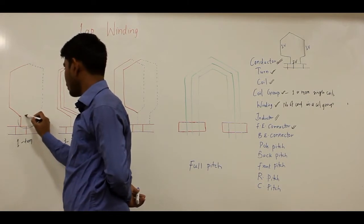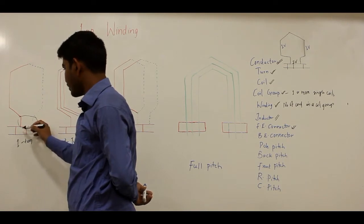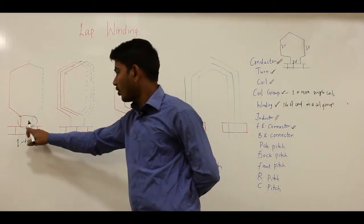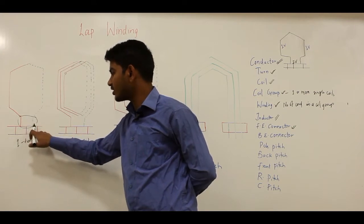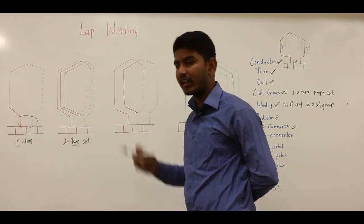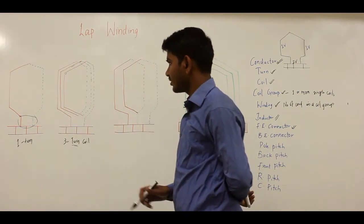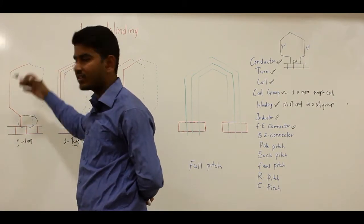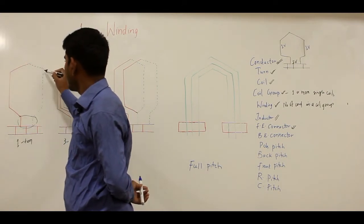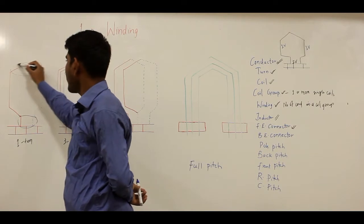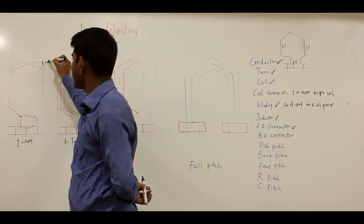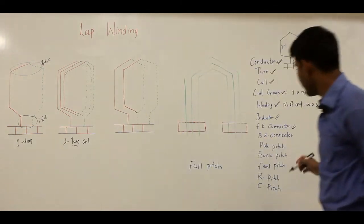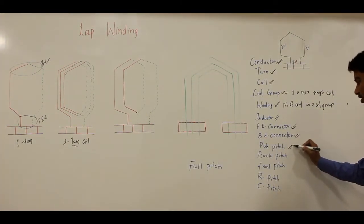The front end connector is a wire connecting the front portion of a coil to the adjacent commutator segments — especially in lap winding. The back end connector connects the inductor on one side of a coil to the inductor on the other side of the coil via a wire in the back part. So the front end connector is in the front part and the back end connector is in the back part.